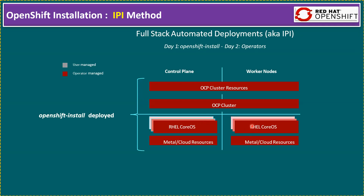Once we have the operating system on the control plane and worker nodes — three master nodes and three worker nodes — the grouping of these six VMs is called an OCP cluster. On top of the OCP cluster we can start using cluster resources: we can create multiple pods, and if you enable the OpenShift Virtualization feature, we can also create virtual machines within your OpenShift environment — meaning we can run container applications on pods and OpenShift virtual machines simultaneously.